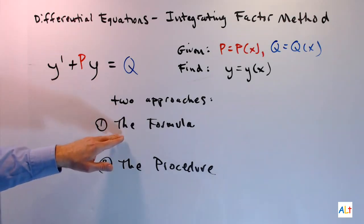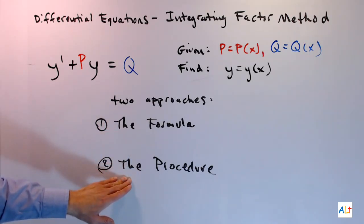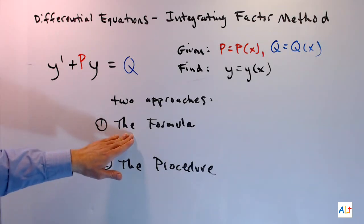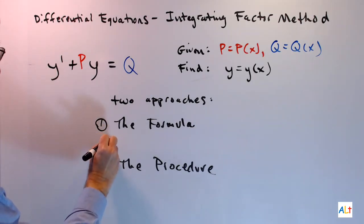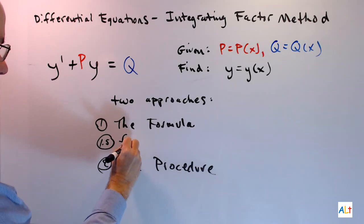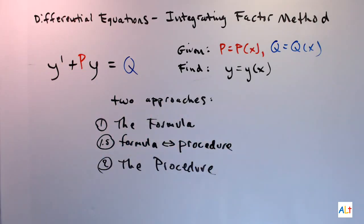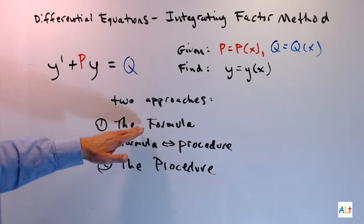Now, the formula does have its drawbacks, which is why many people prefer to do the procedure. I'm going to show you the formula and do an example. I'll show you the procedure and do an example there. And I'm also going to show you how the formula and the procedure are connected. Most textbooks present this in the opposite order of how I'm doing it. They start with the procedure, and then they use the procedure to derive the formula. So, let's see about that formula.